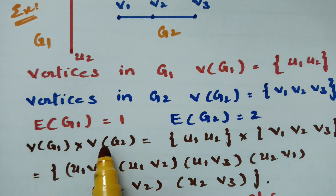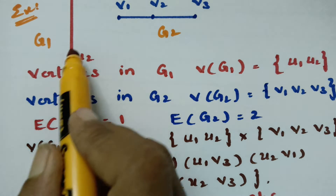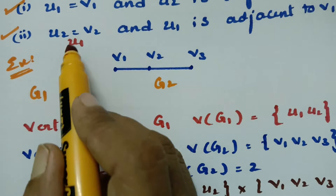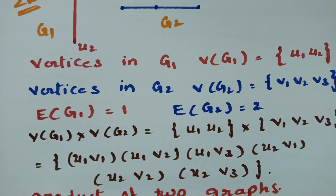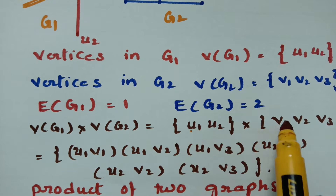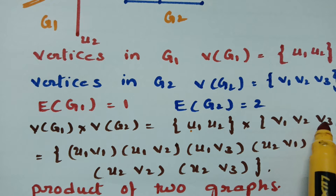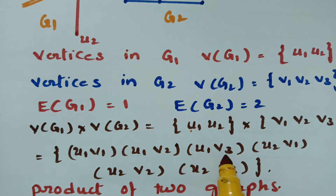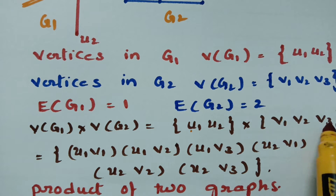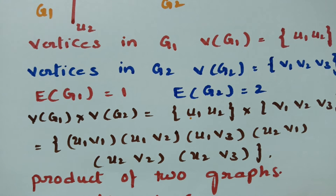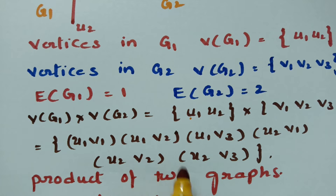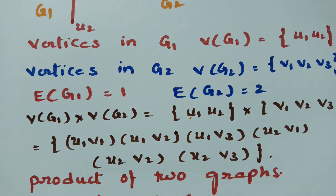Next, we make the cross product of the vertices from G1 and G2. G1 has vertices U1 and U2, and G2 has vertices V1, V2, V3. The cross product gives us six vertex pairs: (U1,V1), (U1,V2), (U1,V3), (U2,V1), (U2,V2), (U2,V3). These are the six points of the product graph.